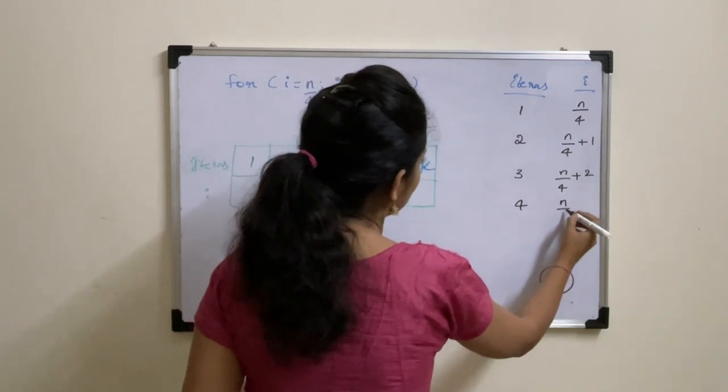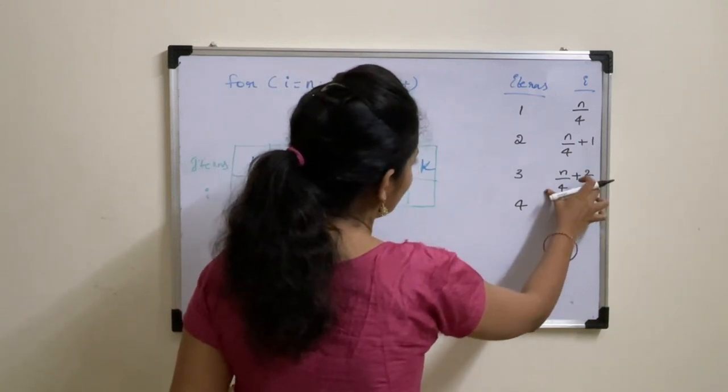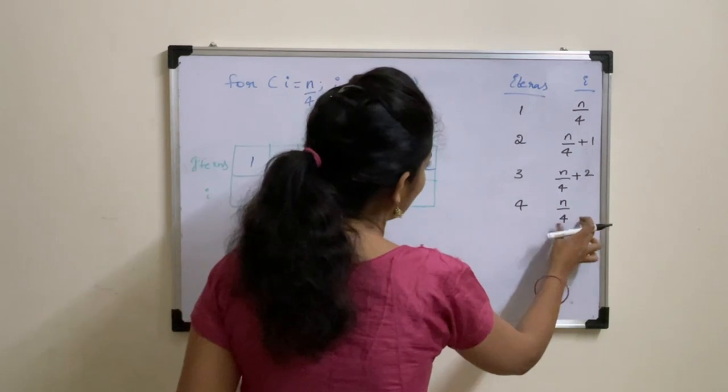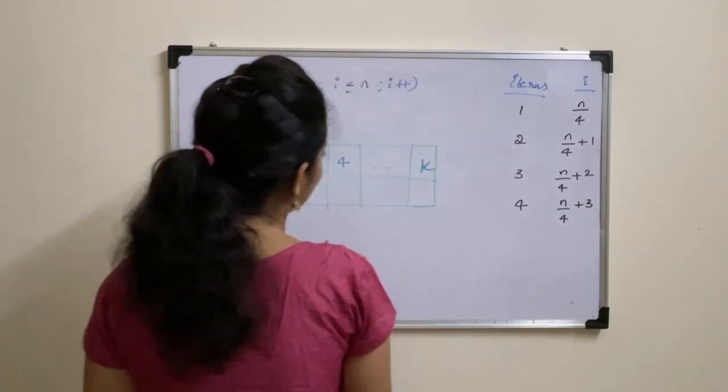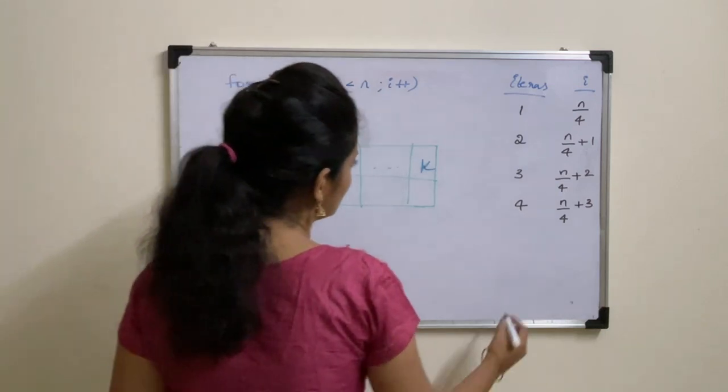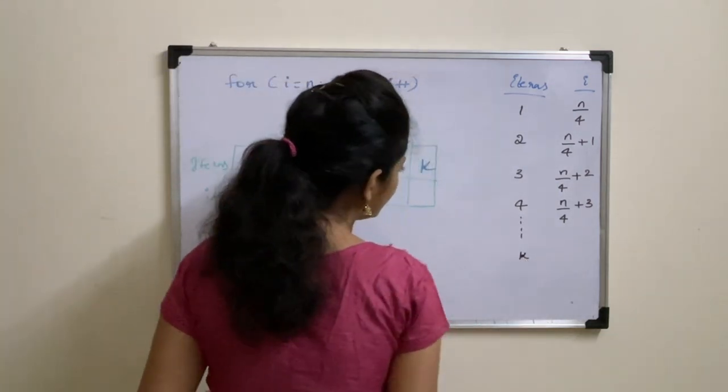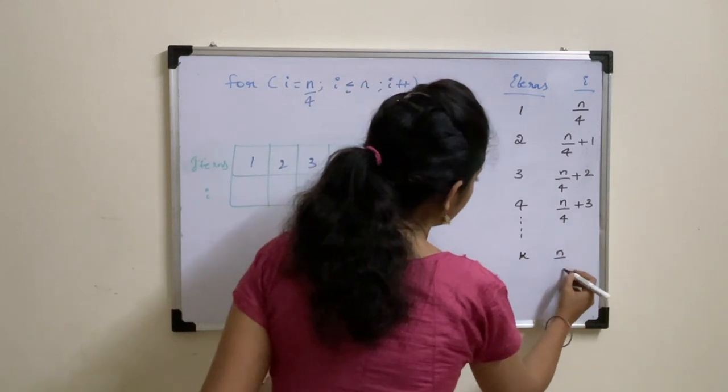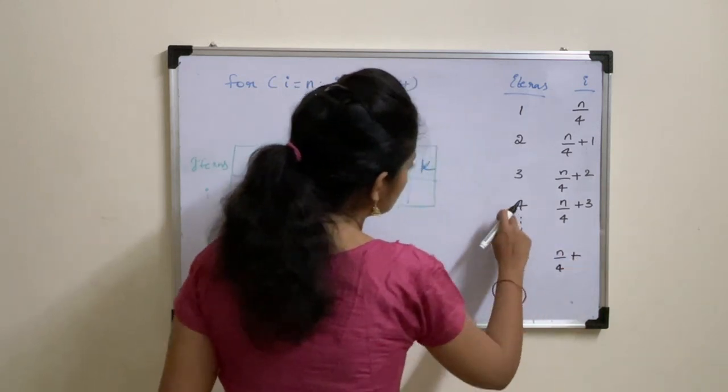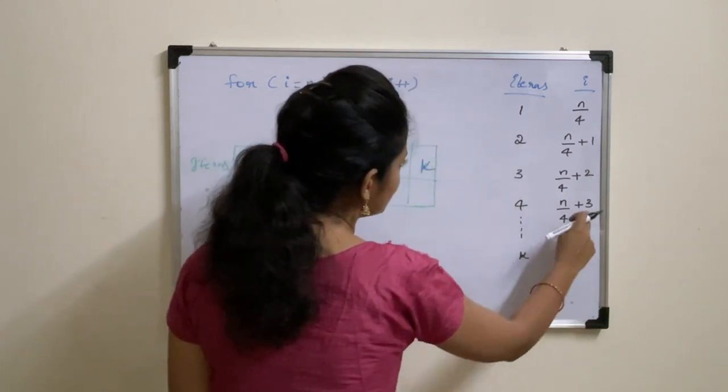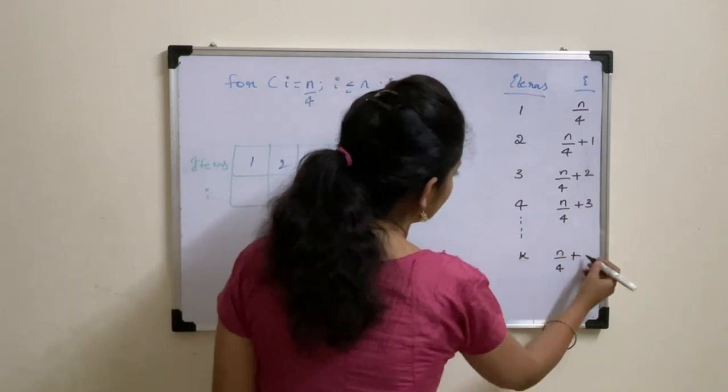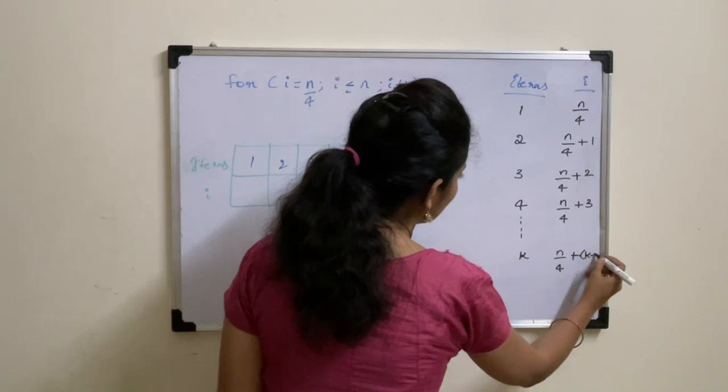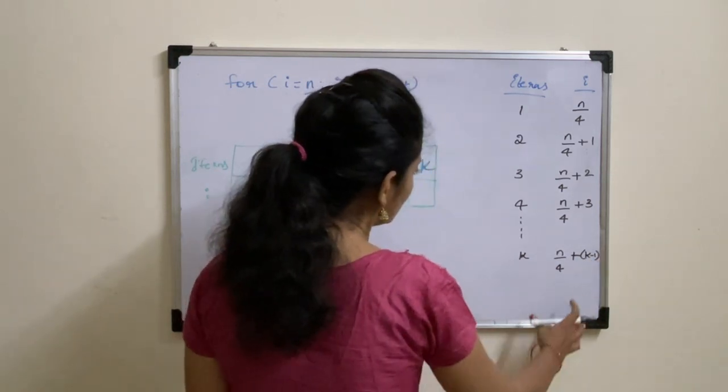During fourth iteration, previous value is N by 4 plus 2. So it will be N by 4 plus 3. And so on. During Kth iteration, it will be N by 4 plus, so here if you observe during fourth iteration, value of i is 3. So here during Kth iteration, value of i will be K minus 1.